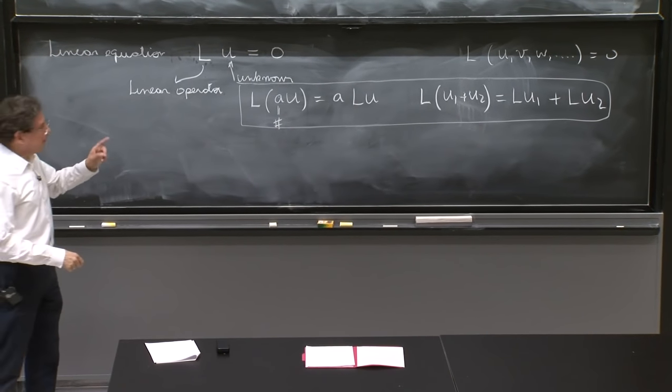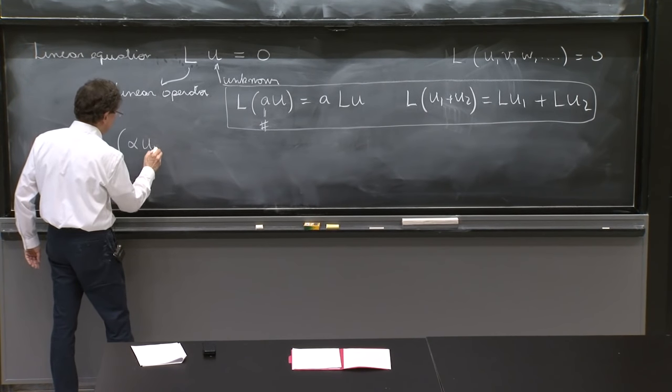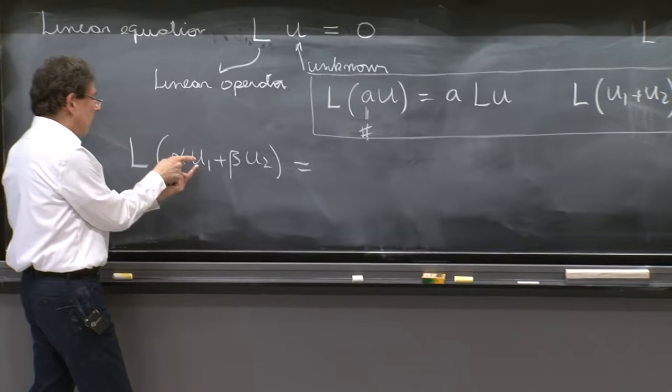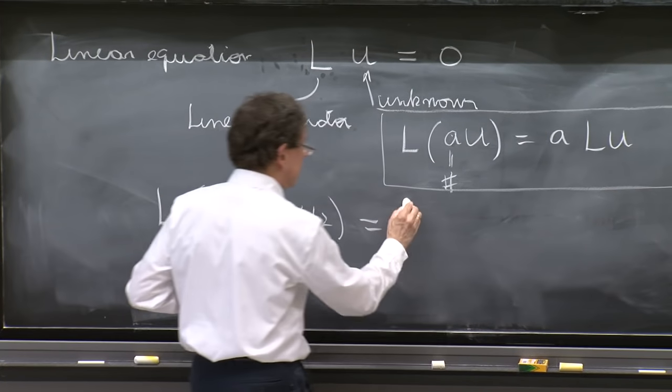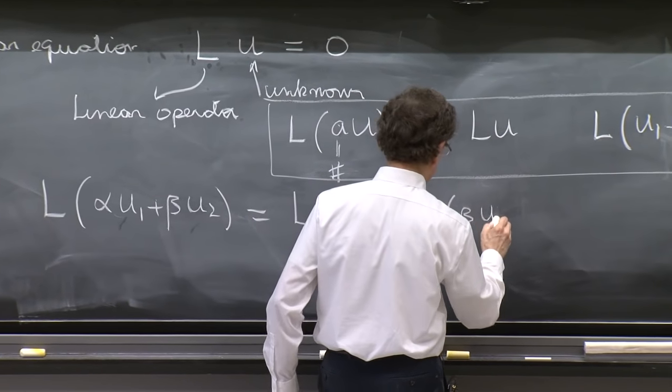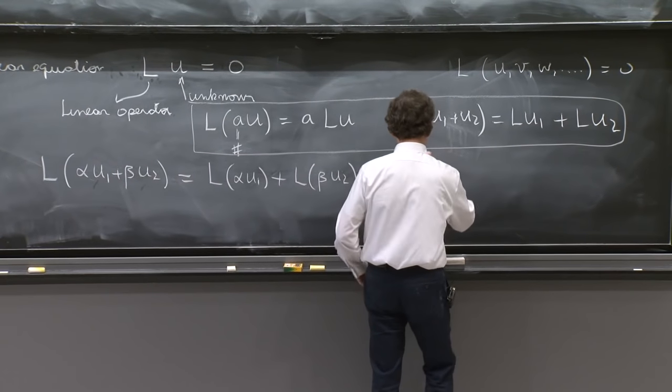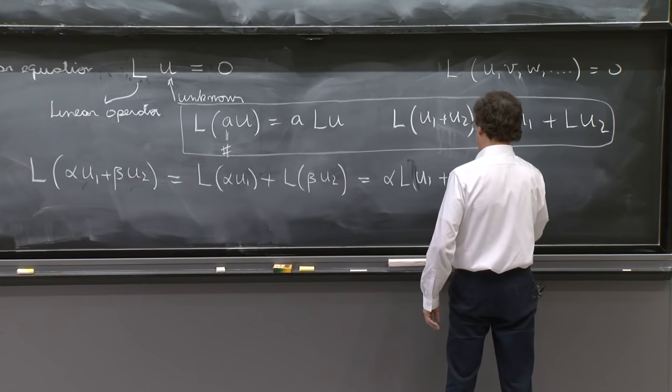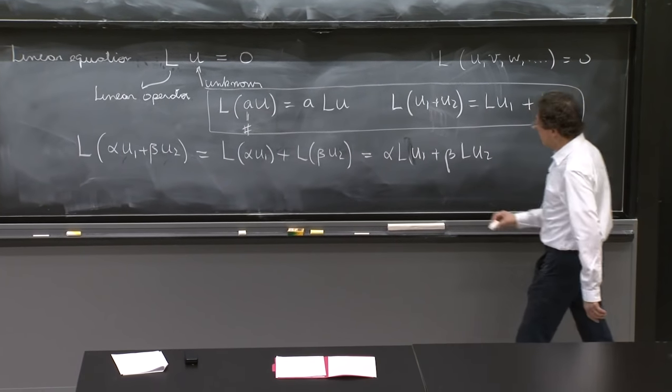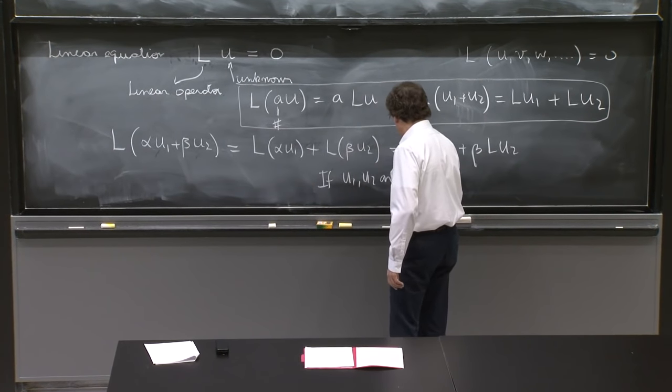So if an operator is linear, you also have L on alpha u1 plus beta u2. You apply first the second property: L on the first plus L on the second. So this is L of alpha u1 plus L of beta u2. Then using the first property, this is alpha L of u1 plus beta L of u2.